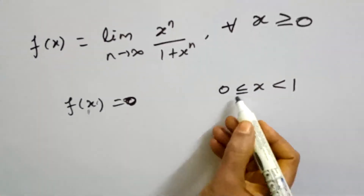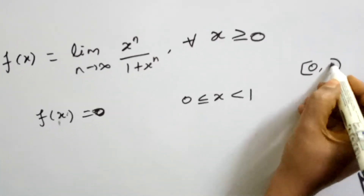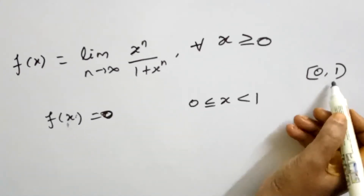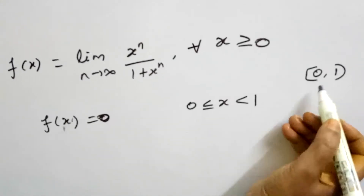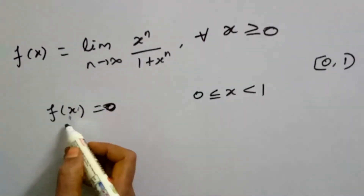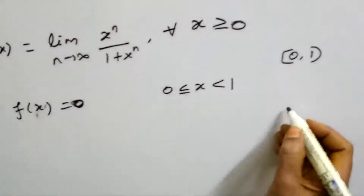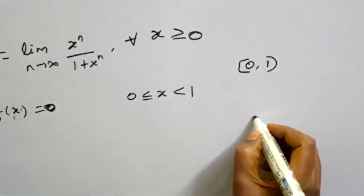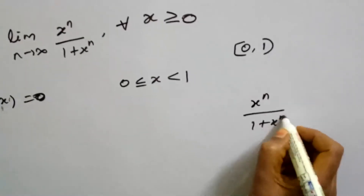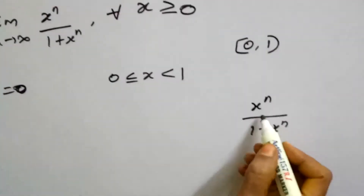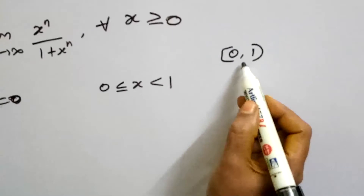In this interval, we consider all x values in [0,1). In this interval, all x values are between 0 and 1. Consider x = 1/2 as an example. In this interval, all x values give xⁿ → 0 as n → ∞.